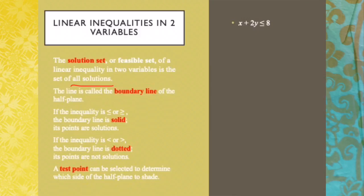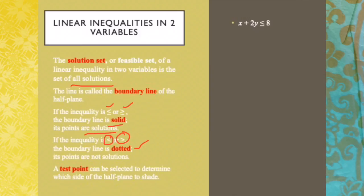If the inequality is less than or equal to, or greater than or equal to, the boundary line is solid, meaning all points on the boundary line are also solutions to the inequality. If the inequality is less than or greater than, the boundary line is dotted, meaning the points on that line are not part of the solution.